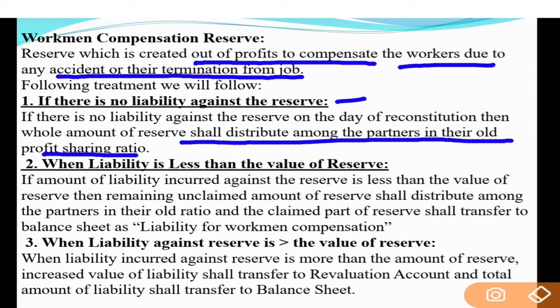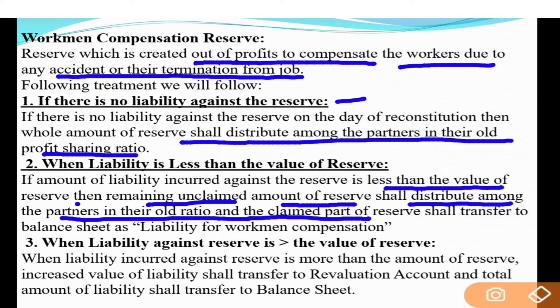Case 2 - agar liability less than the value of reserve hai, say reserve di value 10,000 hai aur liability 8,000 hai, ta 2,000 free ho gaya. Free reserve old partners de vich distribute kar do. Jo 8,000 di liability hai us nu balance sheet de andar stand karna hai. Treatment: remaining unclaimed amount of reserve shall be distributed among partners in their old profit sharing ratio. Jo 8,000 di liability hai us nu balance sheet vich shift kar do with the name 'Liability for Workman Compensation', aur 2,000 capital account vich old partners nu old ratio vich distribute hoga.